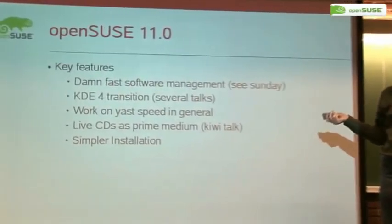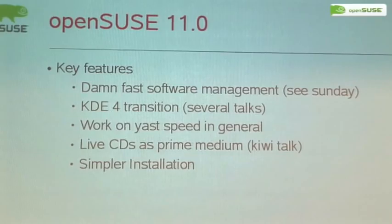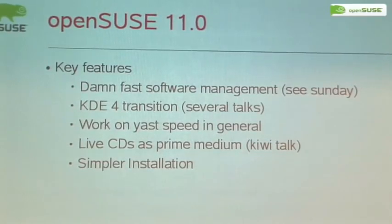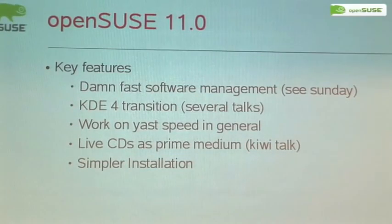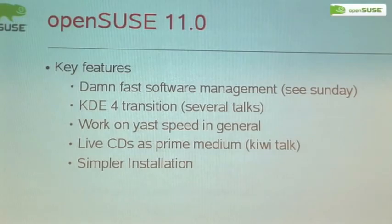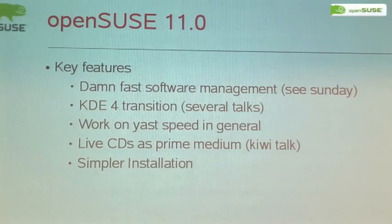Besides these new software versions that are in every distribution released in June, we will have a damn fast software management — and I'm not joking — it's not just faster than the previous version, it's as fast as or faster than the competition. We will have KDE 4; the alphas already use KDE 4 as the default KDE. YaST hub, and if everything goes well, we will stick with it.